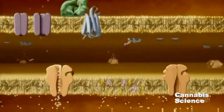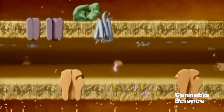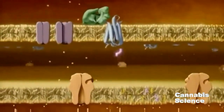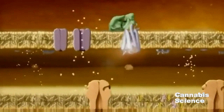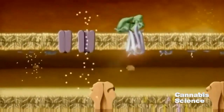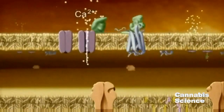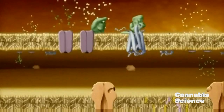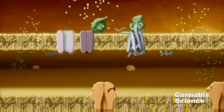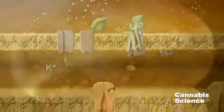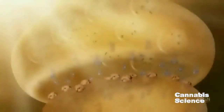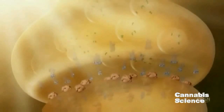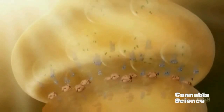This calcium buildup causes the synthesis and release of endocannabinoids from membrane lipids. Diffusing across the synaptic cleft, the endocannabinoids bind to the CB1 receptor, activating the G-protein. Activation influences ion flow, resulting in suppression of pre-synaptic neurotransmitter release. Endocannabinoids are subsequently taken back into the cell and enzymatically degraded.